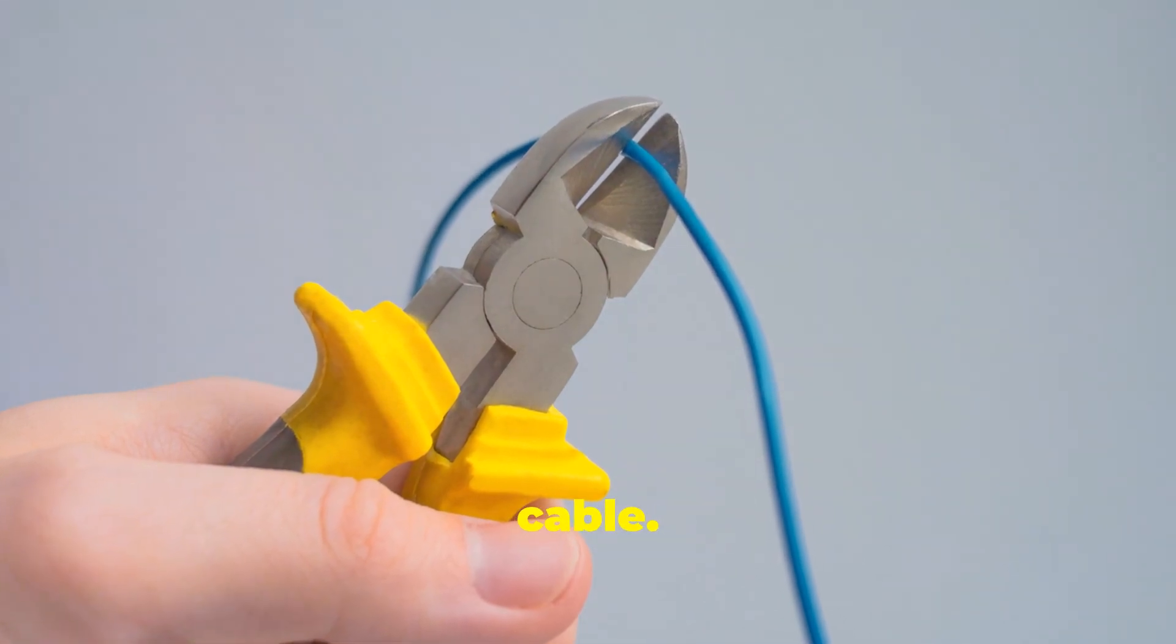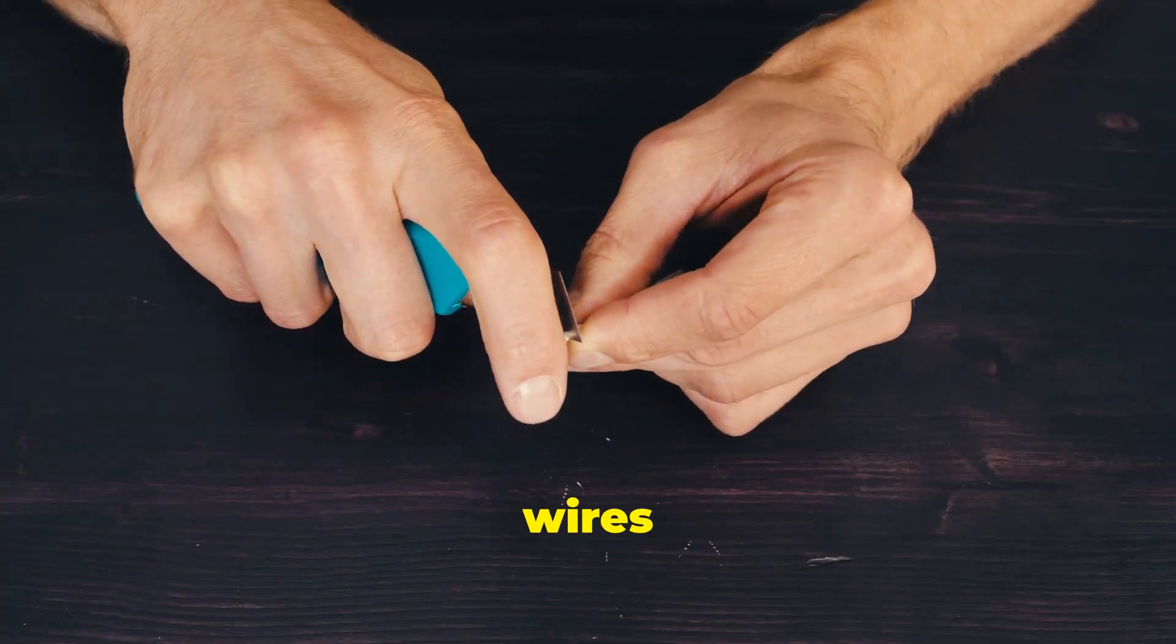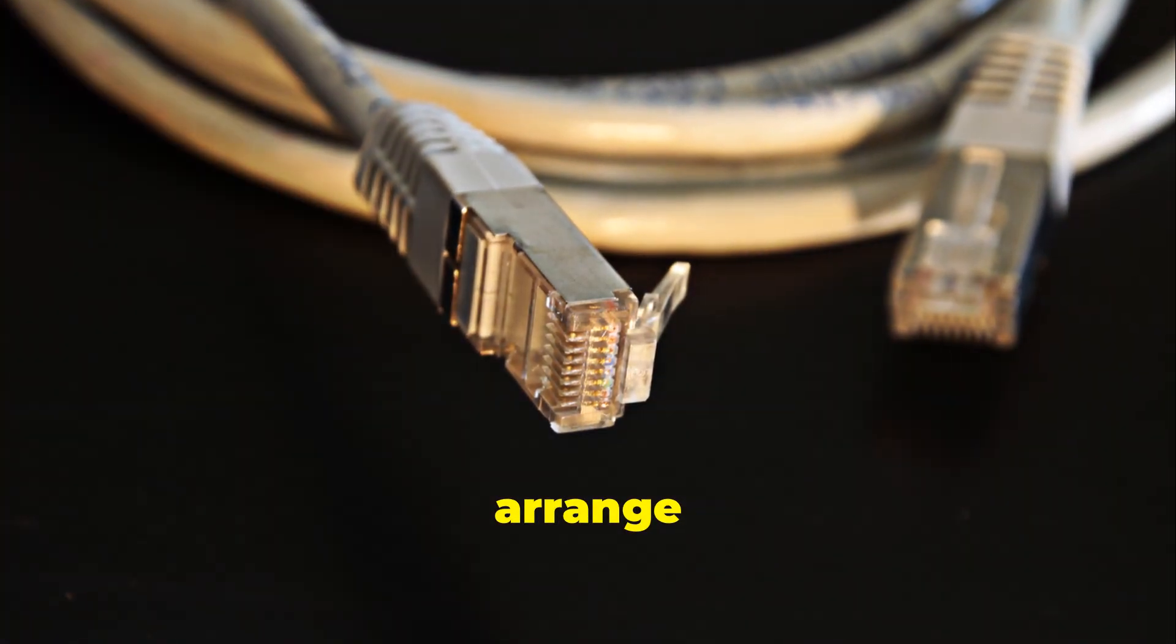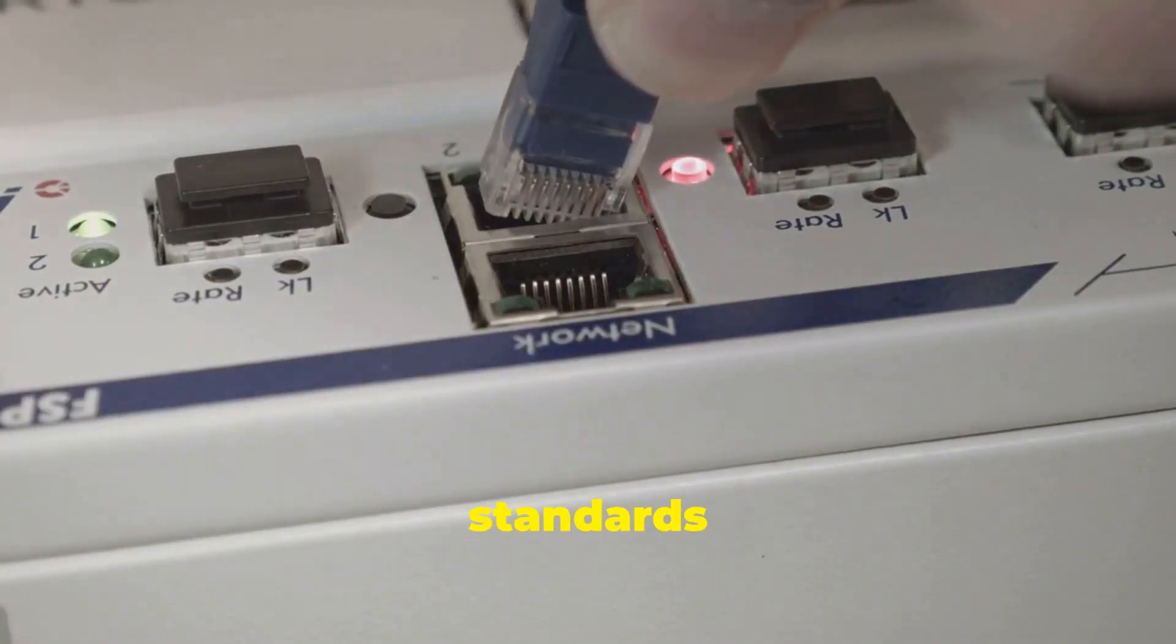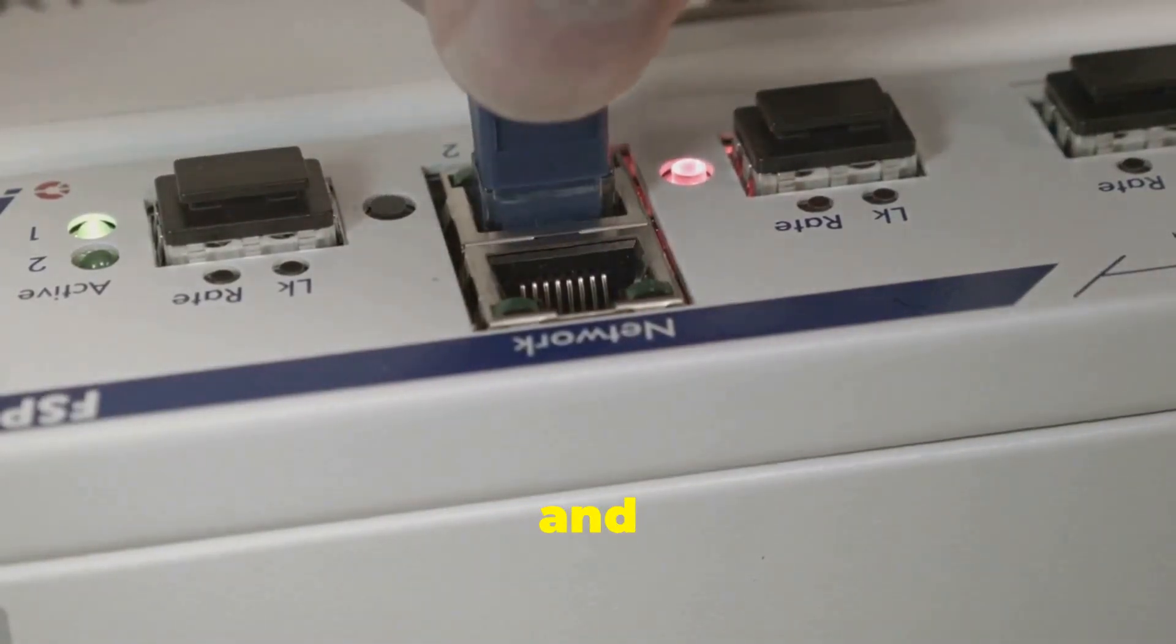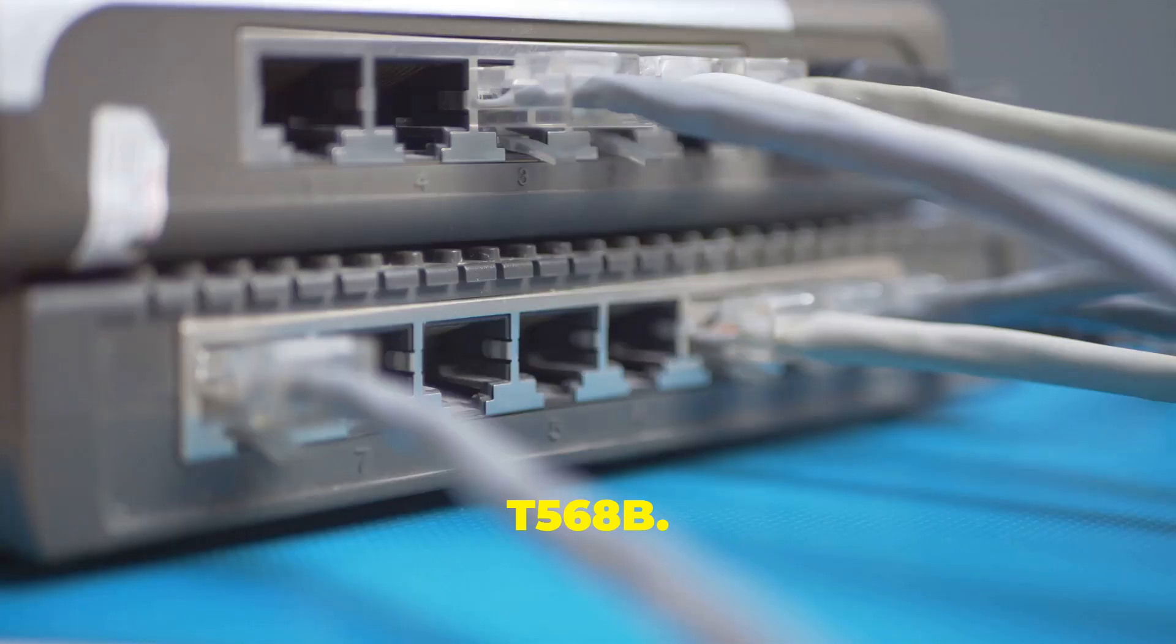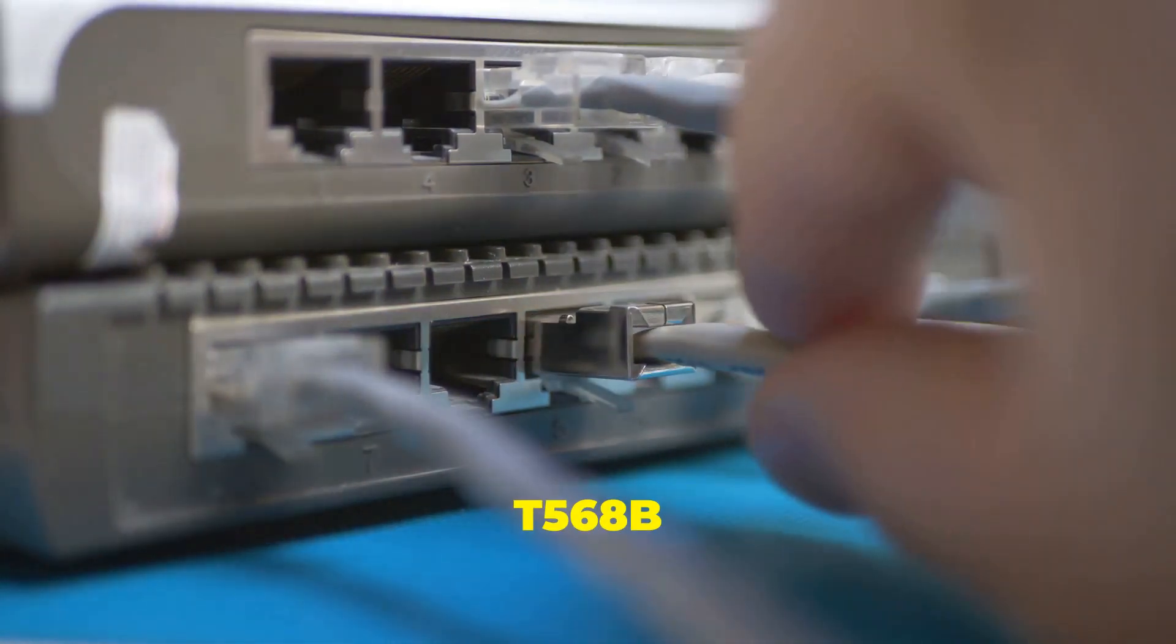Untwist the exposed wires and arrange them in the correct order. There are two main wiring standards: T568A and T568B. For most home networks, T568B is more common.